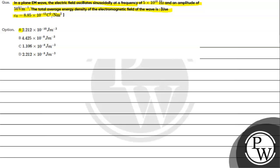Option A: 2.212 times 10 raised to minus 10 joule per meter cube. Option B: 4.425 times 10 raised to minus 8 joule per meter cube. Option C: 1.106 times 10 raised to minus 8 joule per meter cube. Option D: 2.212 times 10 raised to minus 8 joule per meter cube.